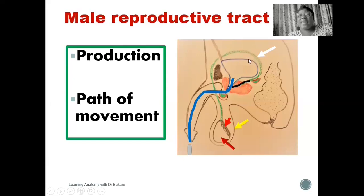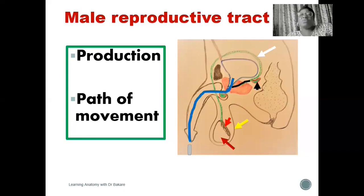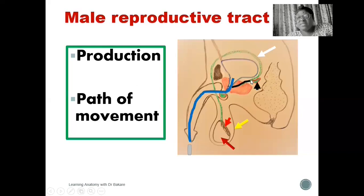As sperm runs through the vas deferens, at its terminal end there is a merge with the duct of the seminal vesicle, arrowed in black. The seminal vesicles are one of the male accessory reproductive organs that help to nourish and liquefy the sperm, allowing it to move faster and easier without expending much energy. The seminal vesicle releases its content through its duct, which merges with the vas deferens to form the ejaculatory duct, highlighted in black and arrowed in yellow.